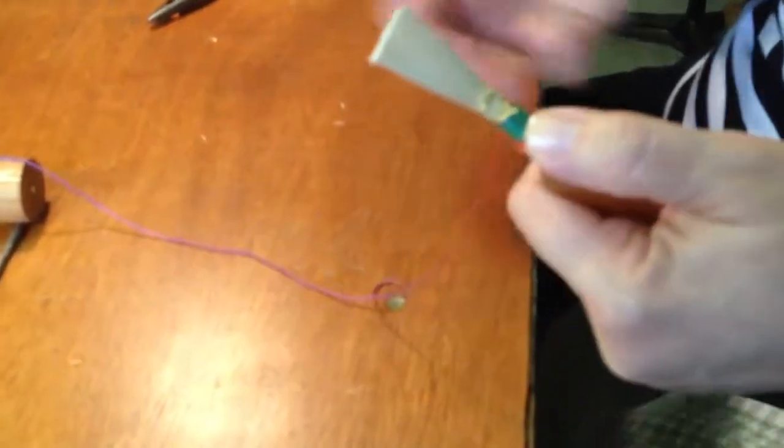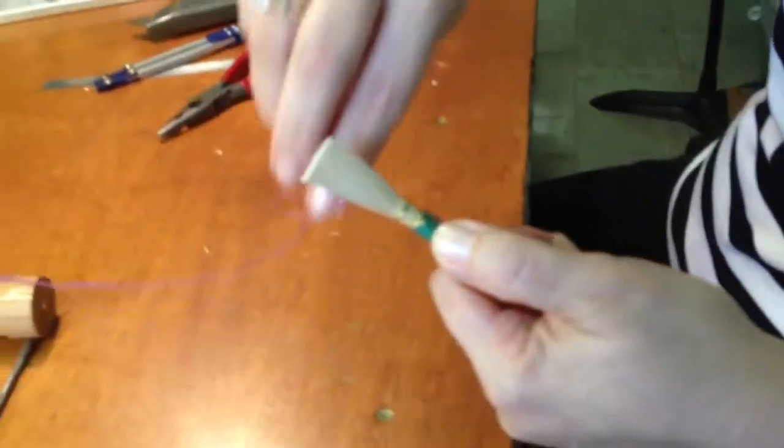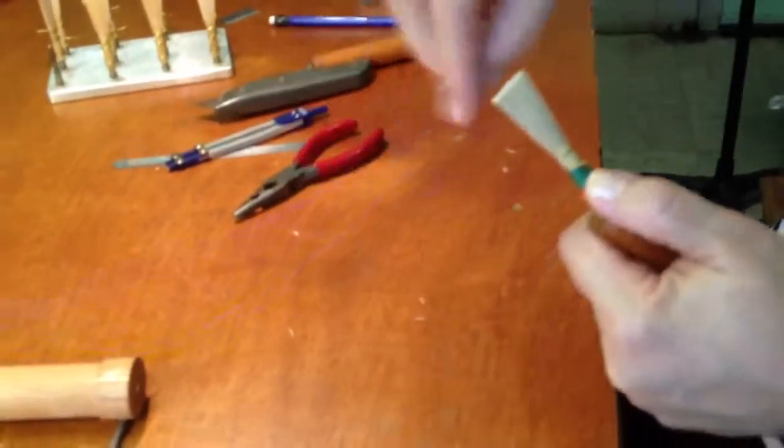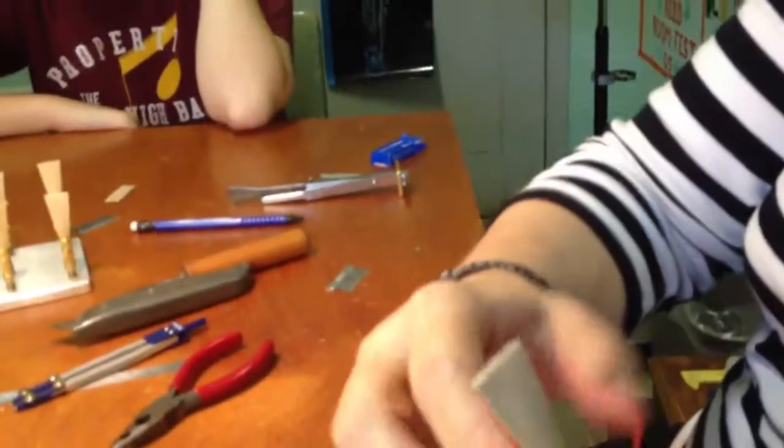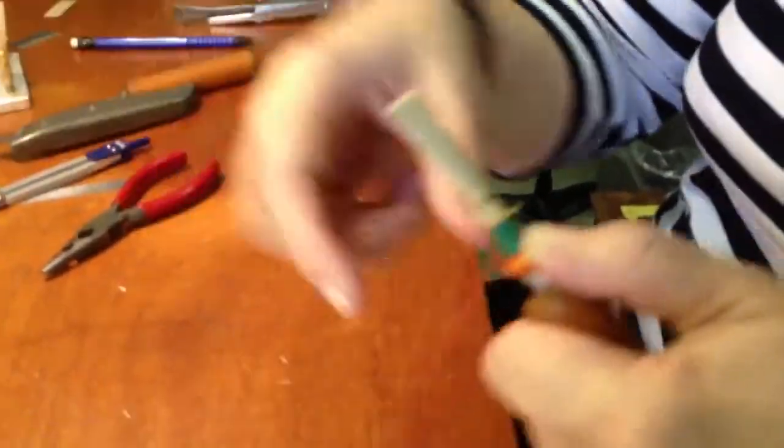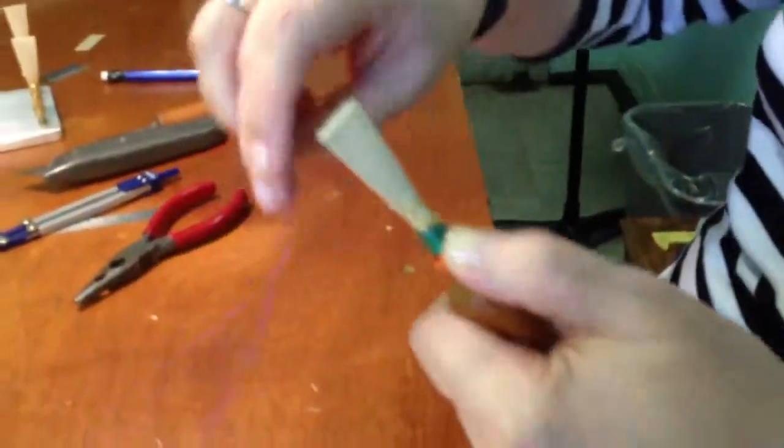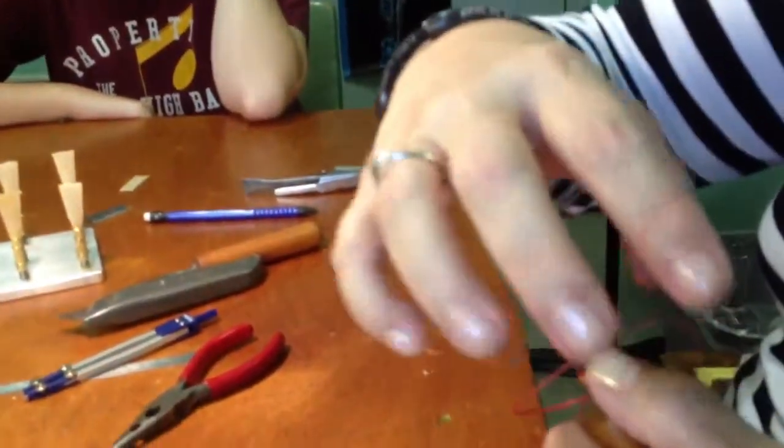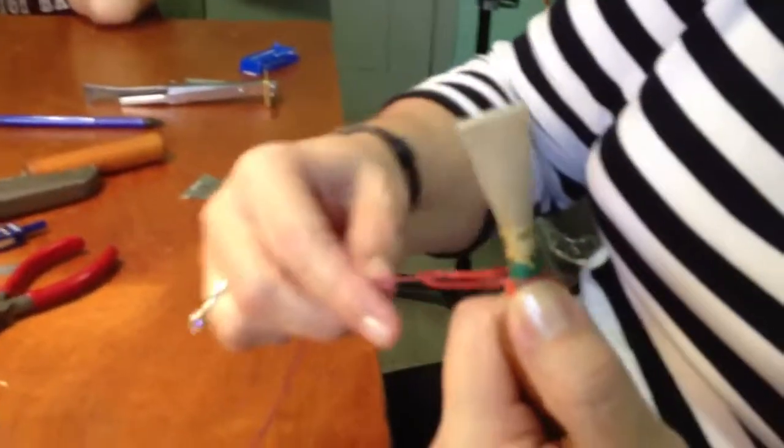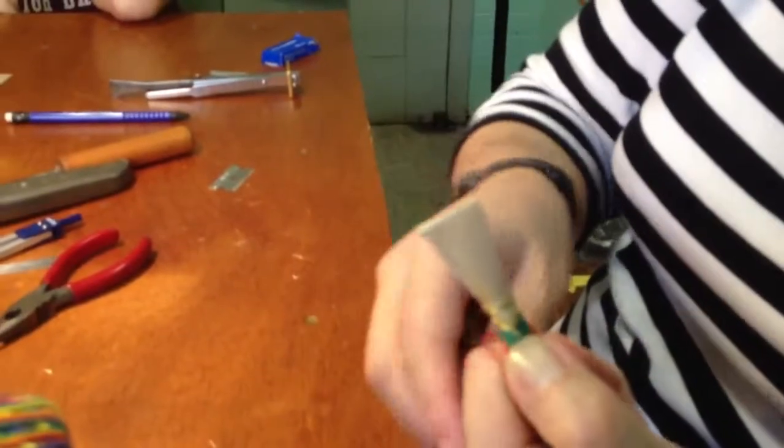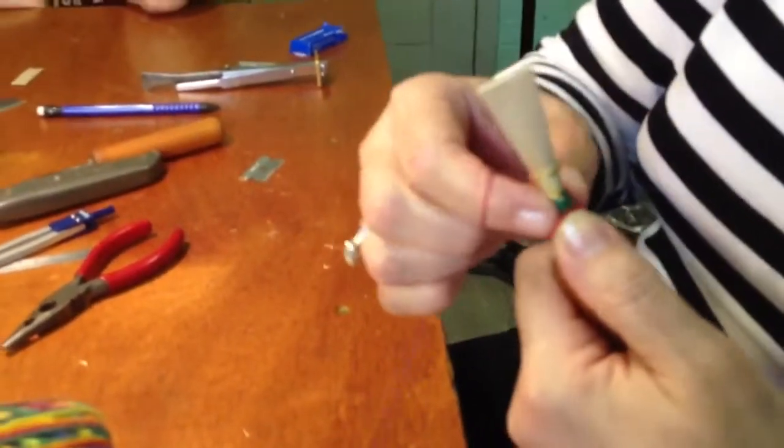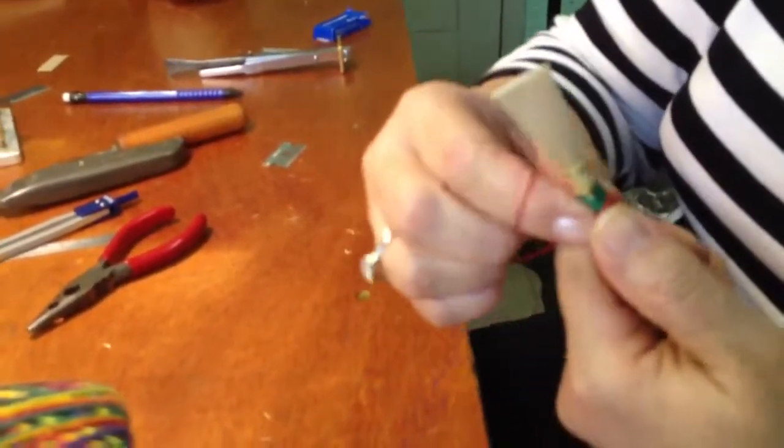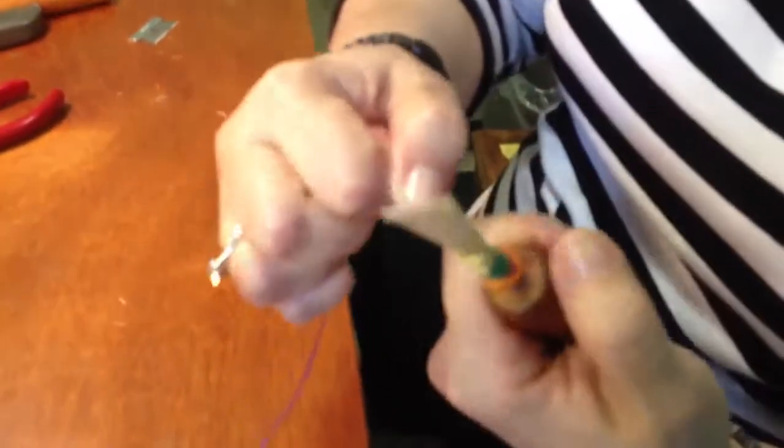So you secure it with your thumb. And you make a loop. Let me show you that again. The loop goes this way, so that when you pull this in, the thread's going to disappear into that Turk's head.